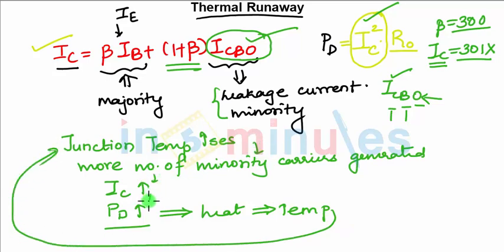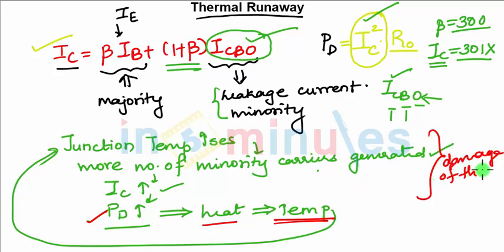So this is the process of thermal runaway. If the temperature increases, again the number of minority carriers generated will be increased. Again IC increases, again power dissipated across the transistor increases in the form of heat, again the temperature increases, and this process continues. This entire process can lead to the damage of the device if it is not controlled.